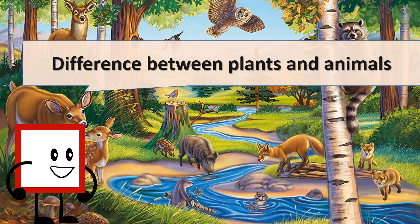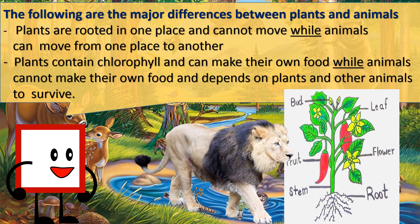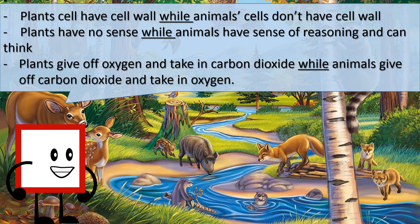Differences between plants and animals. Plants are rooted in one place and cannot move, while animals can move from one place to another. Plants contain chlorophyll and can make their own food, while animals cannot make their own food and depend on plants and other animals to survive. Plants have a cell wall while animal cells don't have a cell wall. Plants have no sense while animals have a sense of reasoning and can see. Plants give off oxygen and take in carbon dioxide, while animals give off carbon dioxide and take in oxygen.